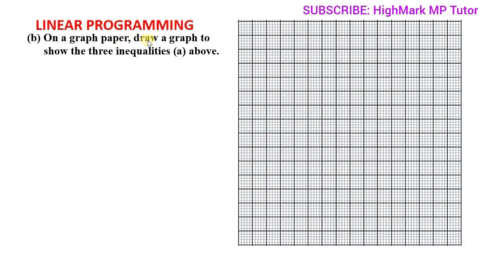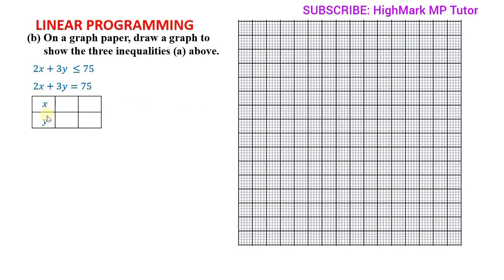For part B, on graph paper, draw a graph to show the three inequalities from part A. The first inequality is 2x + 3y ≤ 75. We replace the inequality symbol with an equals sign to get 2x + 3y = 75, then draw the line represented by this equation on a graph. We make a table of x and y values, choosing values of x that give whole number values of y.